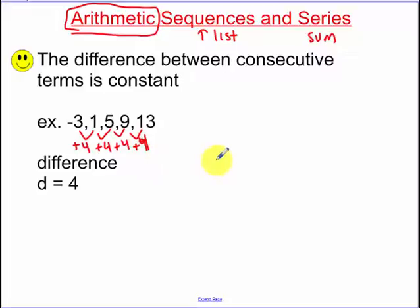One of the things that we're going to be doing in this section is we are going to be writing an equation or a rule. So a rule is the same thing as an equation for this sequence. Let's look at this, our first term. First term, that's what that sub 1 means, is negative 3.